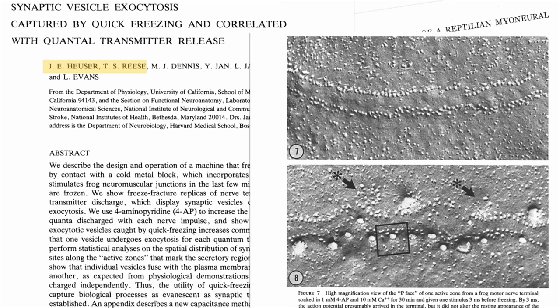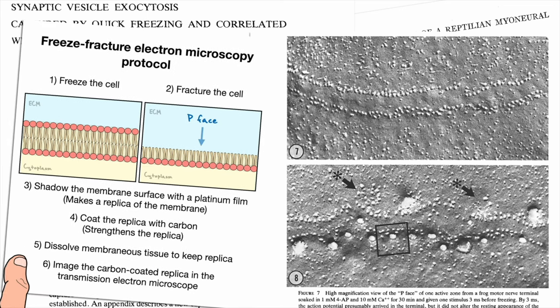To capture the exocytosis process, as you can see on the right, the team performed a technique called freeze-fracture electron microscopy. In a nutshell, freeze-fracture electron microscopy allows the experimenter to visualize features of the cell membrane by seeing the distribution of proteins in the membrane.